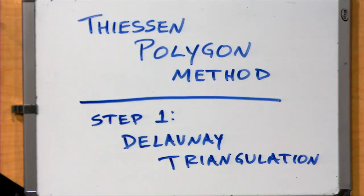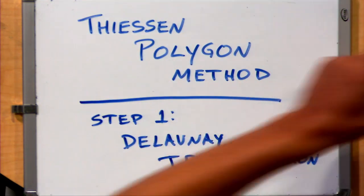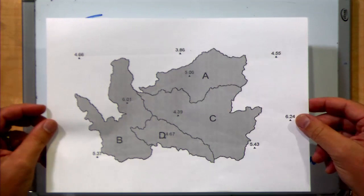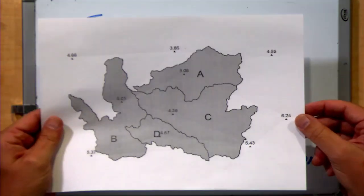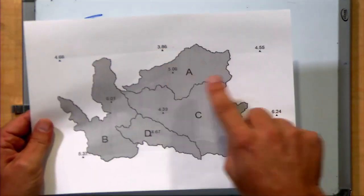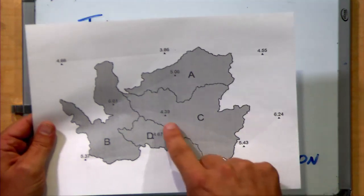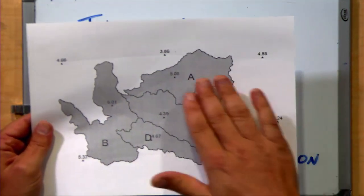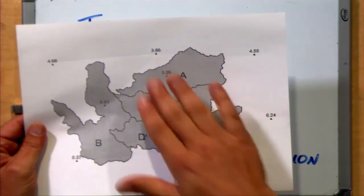Today we're going to start working through a process known as the Thiessen Polygon Method. The first step in the Thiessen Polygon Method is to take our data. Well, first we're going to need some data. In this case, we have some spatially distributed data. You may have seen this before - we have a series of points, rain gauges.